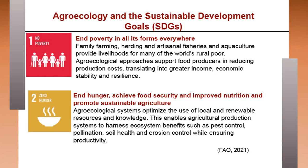SDG 2 is zero hunger: end hunger, achieve food security, improved nutrition and promote sustainable agriculture. Agroecological systems optimize use of local and renewable resources, enabling agricultural production systems to harness ecosystem benefits such as pest control, pollination, soil health and erosion control, while ensuring productivity.